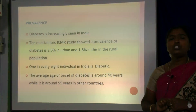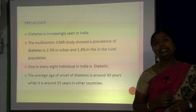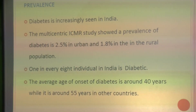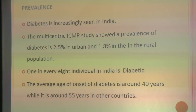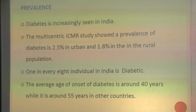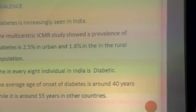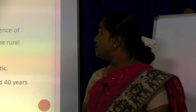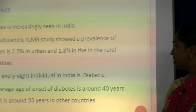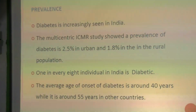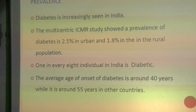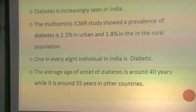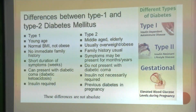Diabetes is increasing in India. The multicentric ICMR study has shown that the prevalence of diabetes is 2.5% in urban and 1.8% in the poorer population. One in every eight individuals in India has diabetes. The average age of onset is around 40 years in India, whereas in other countries it is 50.